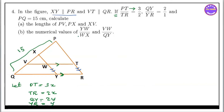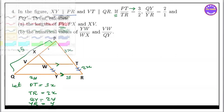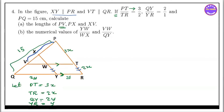PT equals 3x, TR equals 2x, QY equals 2y, YR equals y. The first part is PV.